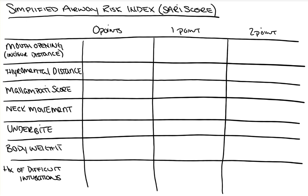The first category is mouth opening. To evaluate mouth opening, we look at the incisor distance — the front two teeth — from the maxilla to the mandible. A distance of less than 4 centimeters is worth 1 point, while a distance of greater than 4 centimeters is worth 0 points. The smaller the mouth opening, the more difficult it is to place the laryngoscope safely without hitting teeth, and to navigate the tongue and place the endotracheal tube.